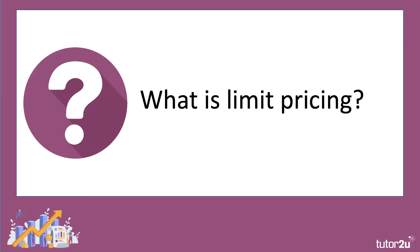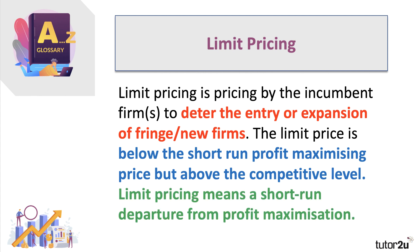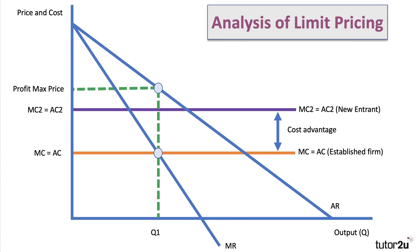This analysis assumes the existing firms have a cost advantage. This gives them scope to use something called limit pricing — where a firm that's been in the market tries to deter the entry or expansion of new firms. They do this by setting a price below their own profit-maximizing price but above the competitive level, and perhaps below what they perceive to be the costs of the new firms.